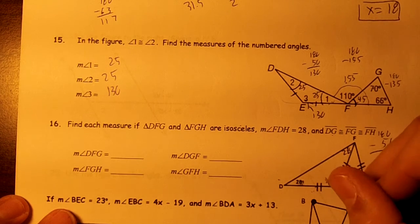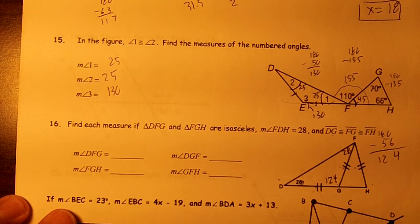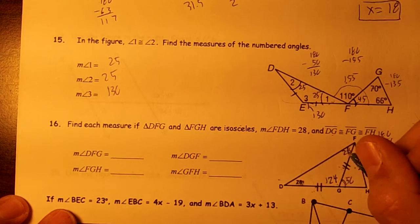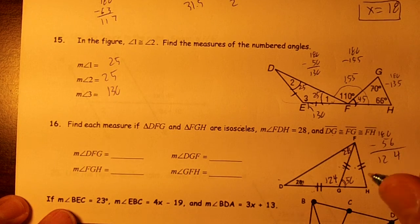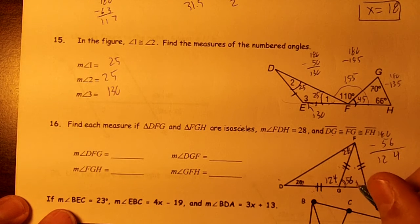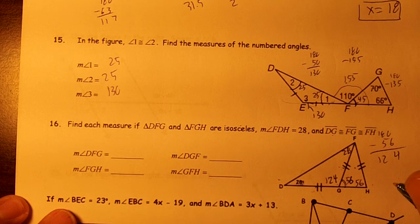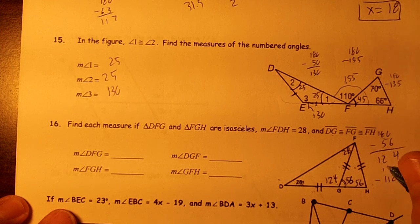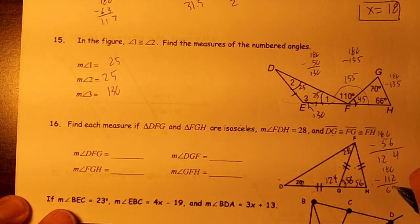This is supplementary. Subtract from 180 and you would get 56. This is an alternate or exterior angle to those two. If this is 56, this is 56. You would get 112 if you added those two up. Subtract from 180 and you would get 68.